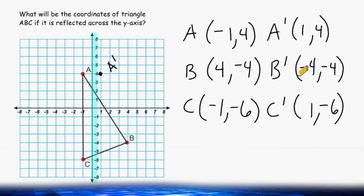And the new location of B is negative 4, negative 4. So we are going to go over to negative 4 on the x axis and then go 4 below. And this is the new location of B.